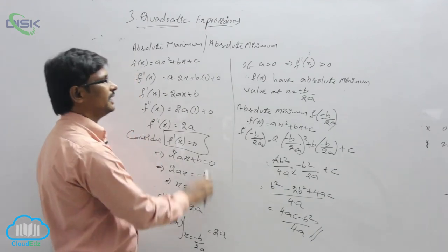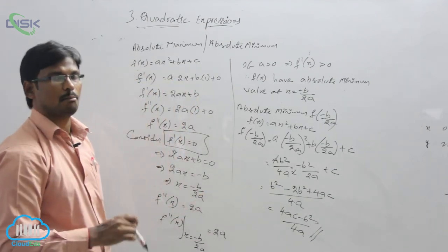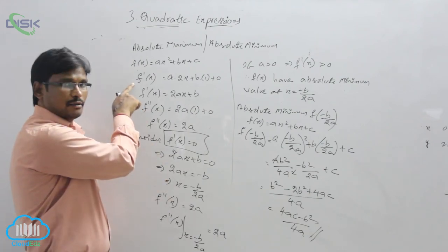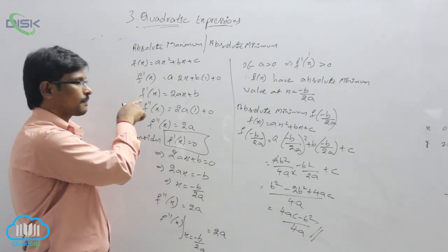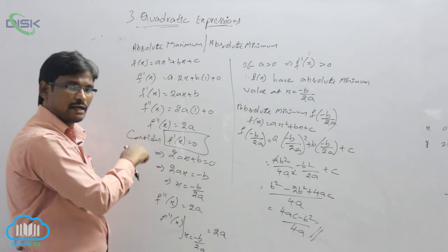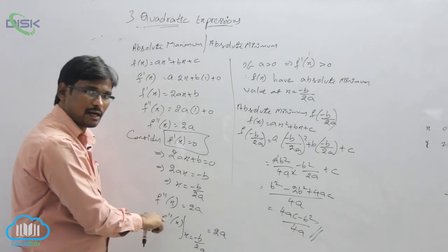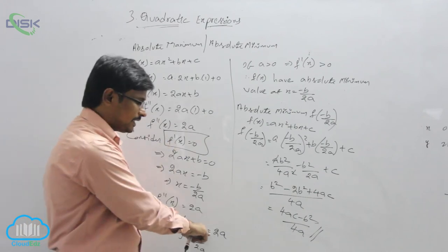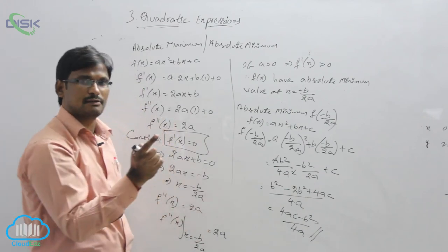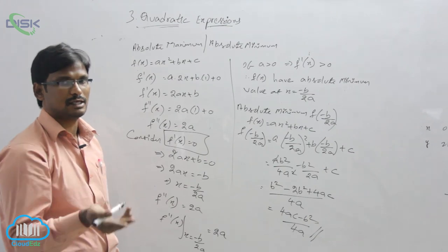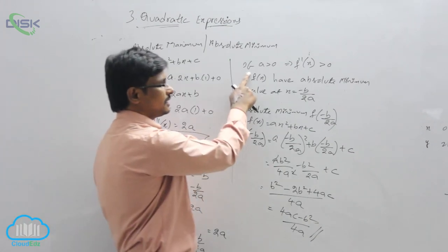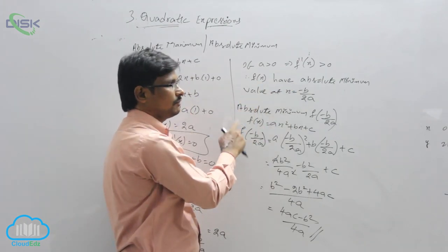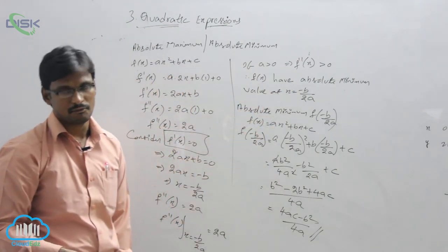This is the method of finding absolute maximum and minimum value using calculus. To recap: we find f dash of x and f double dash of x, then set f dash of x equal to 0 to get the x value, then substitute that x value into f double dash of x to get 2a. In two cases: if a is greater than 0, we get the absolute minimum value; if a is less than 0, we get the absolute maximum value.